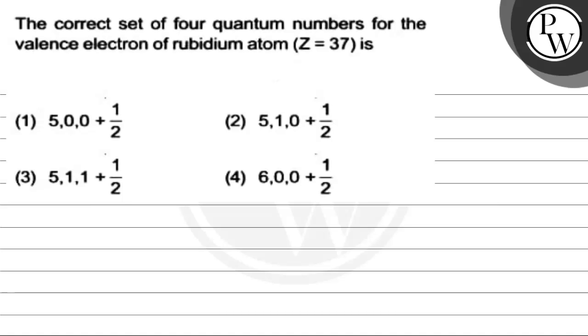Hello, let's read this question. The correct set of four quantum numbers for the valence electron of a rubidium atom, that is Z equals 37, is - we have four options given to us. Option 1 is 5,0,0,+1/2. Option 2 is 5,1,0,+1/2. Option 3 is 5,1,1,+1/2. And option 4 is 6,0,0,+1/2.